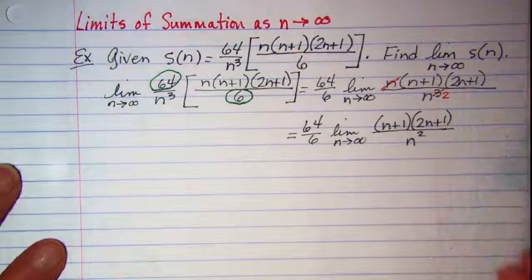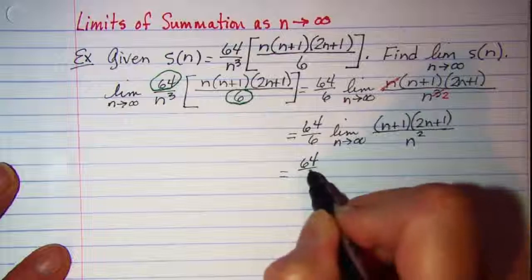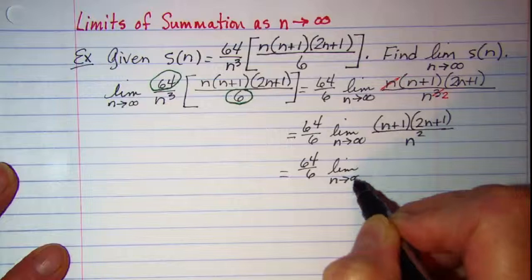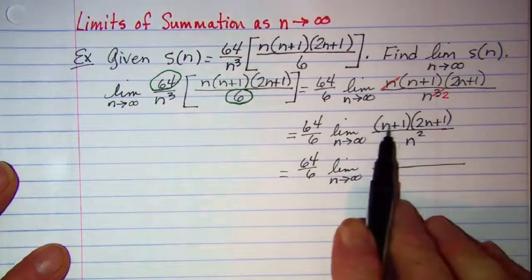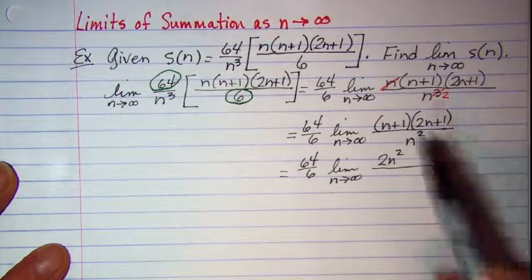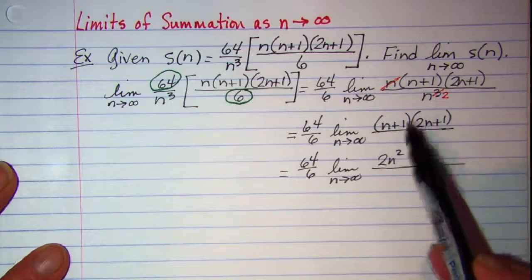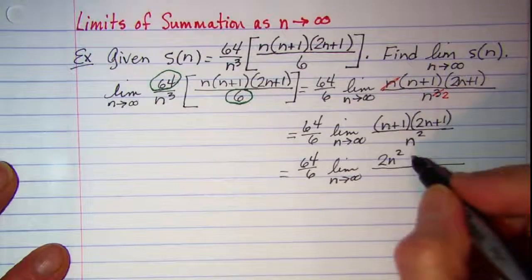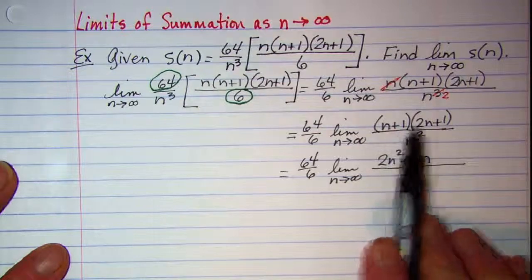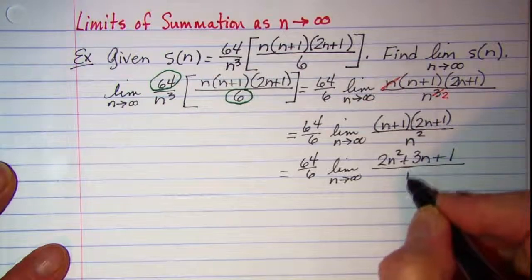We want to multiply this out. So 64 over 6 times the limit as n approaches infinity, n times 2n is 2n squared. My outer product is n. My inner product is 2n. When I combine those I get 3n, and then my last terms multiplied gives me 1. That's over n squared.